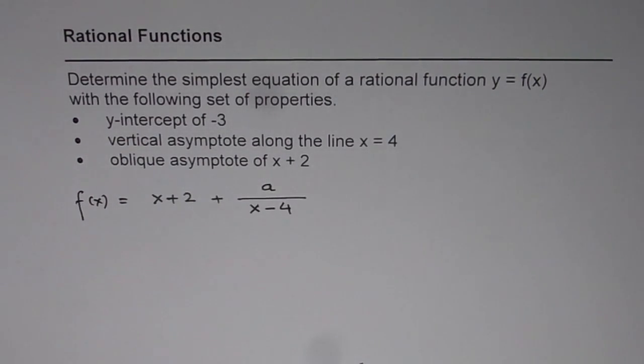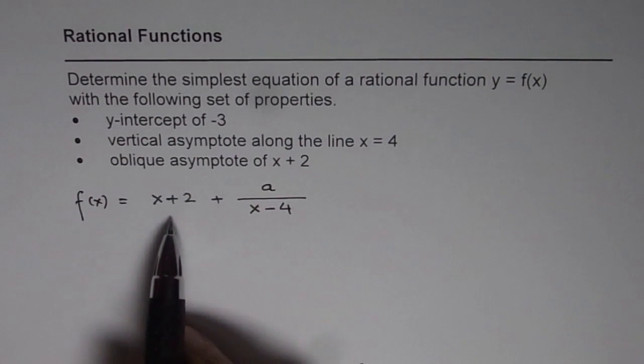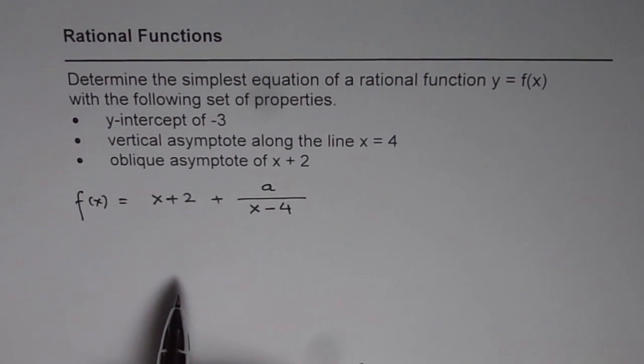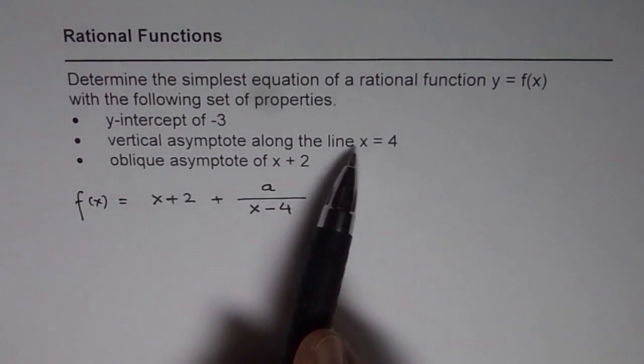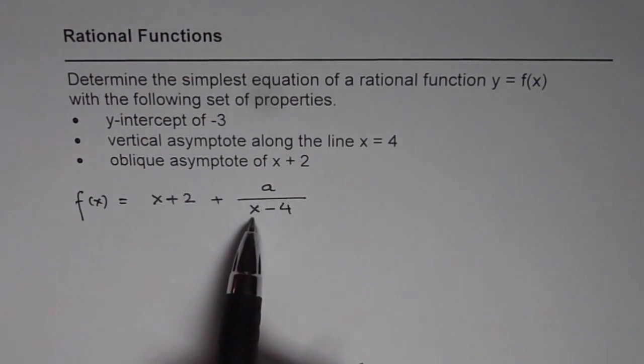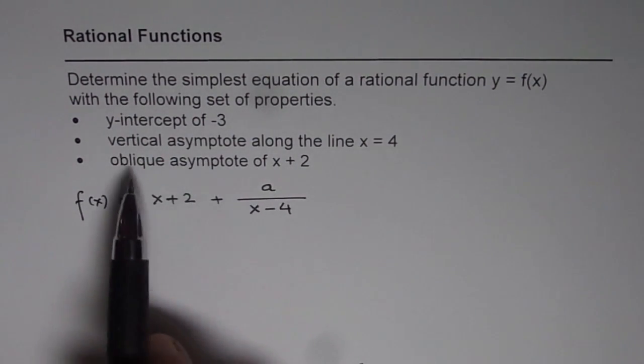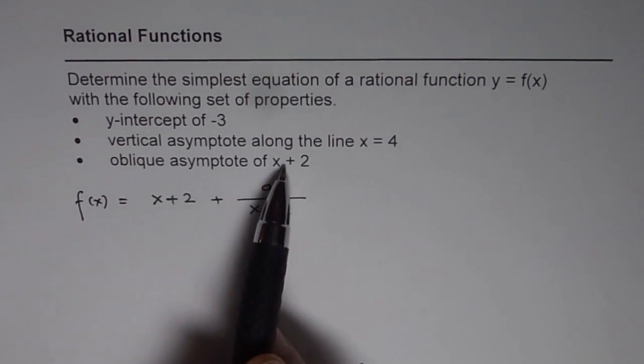So that could be the simplest equation of a rational function which gives you vertical asymptote along the line x = 4, so the denominator will be 0 for x = 4, oblique asymptote of x + 2.